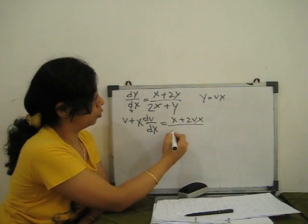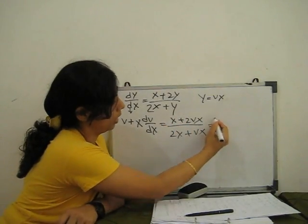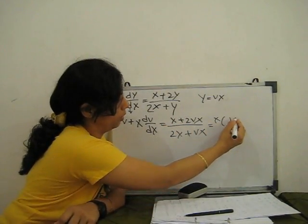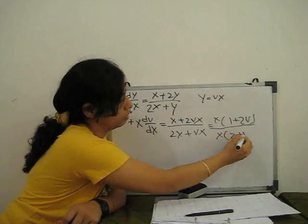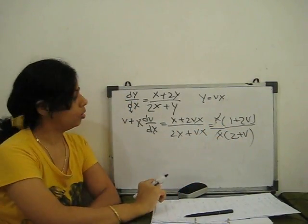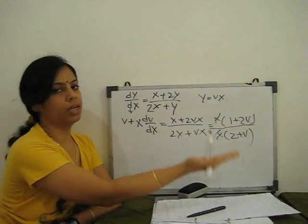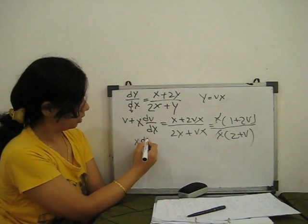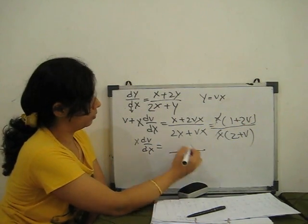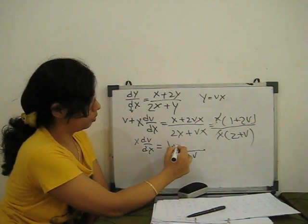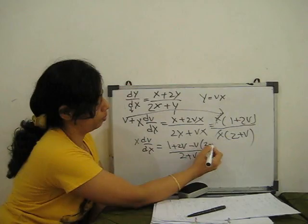With Y = vX, the right side becomes X(1 + 2v) / X(2 + v), so the X cancels. We get v + X·dv/dX = (1 + 2v) / (2 + v). Moving v to the right side: X·dv/dX = (1 + 2v)/(2 + v) − v = (1 + 2v − v(2 + v)) / (2 + v). Expanding: 1 + 2v − 2v − v² = 1 − v². So X·dv/dX = (1 − v²) / (2 + v).